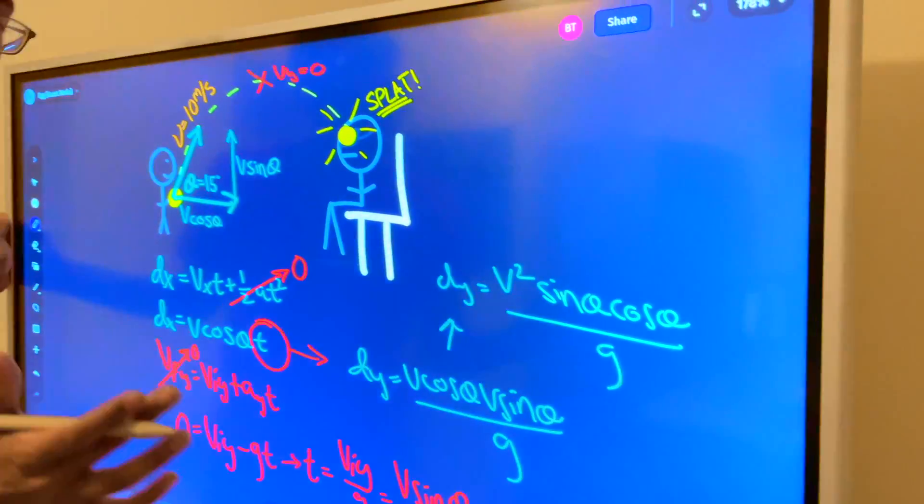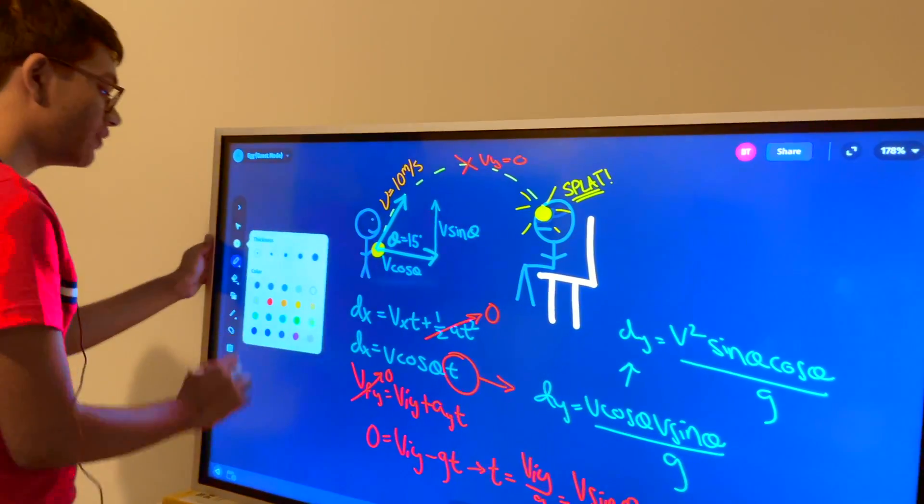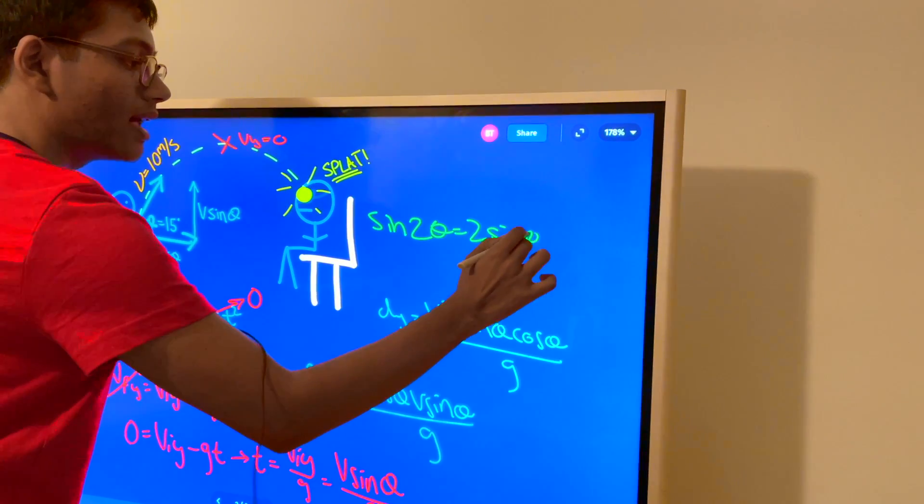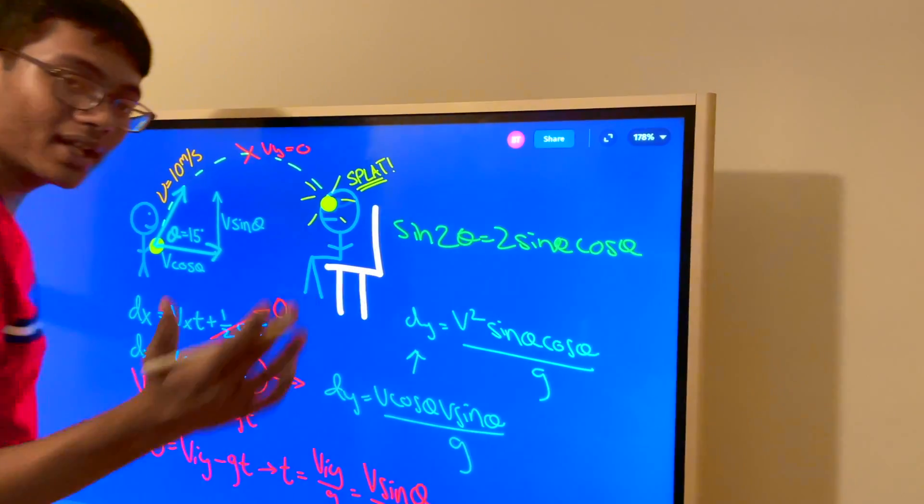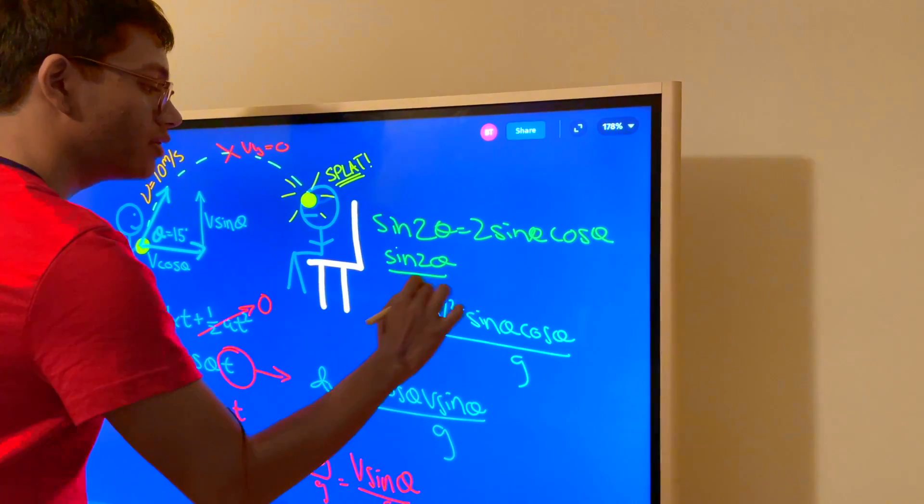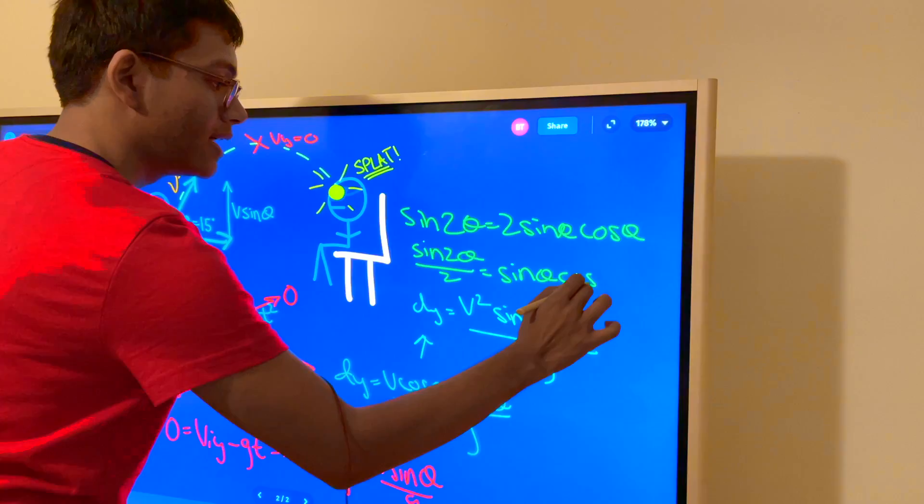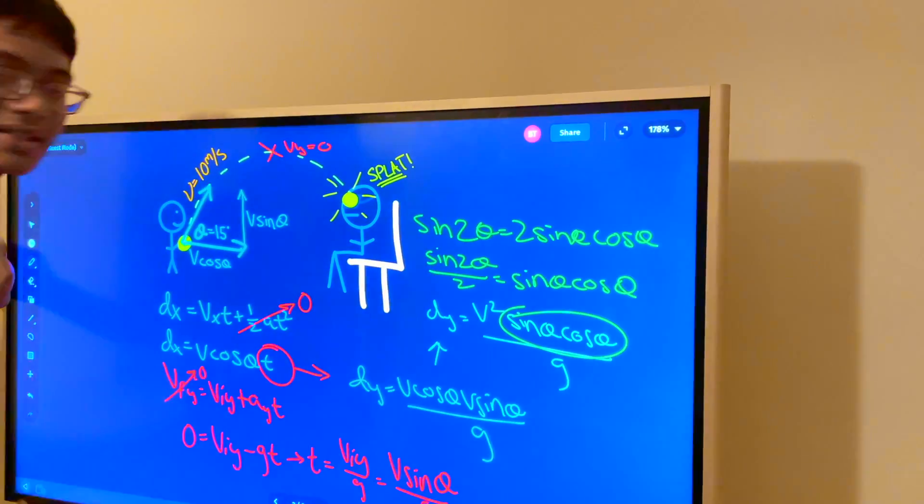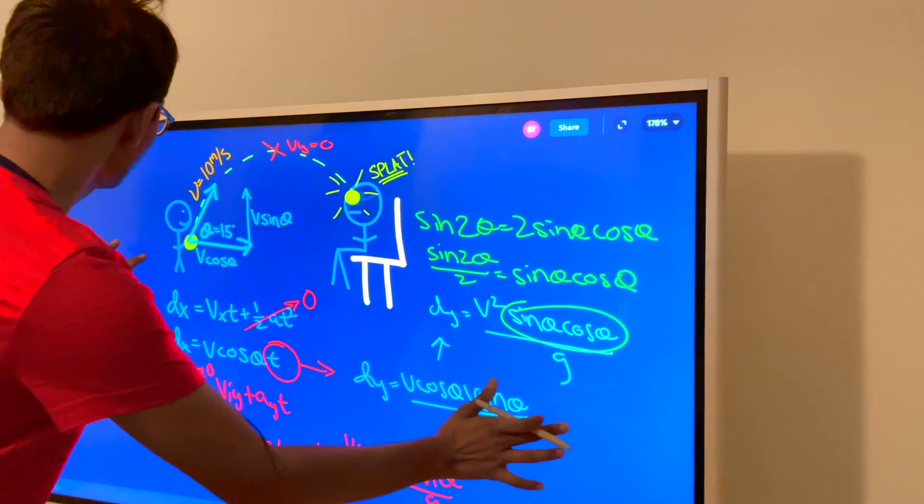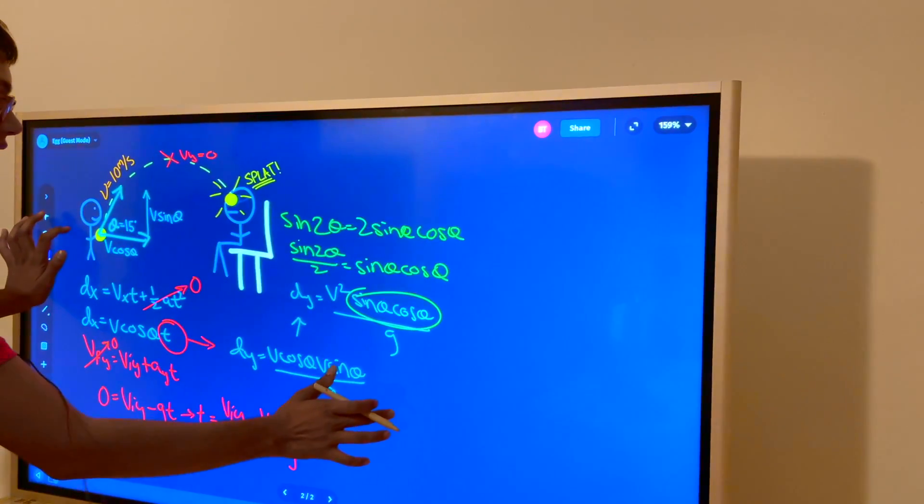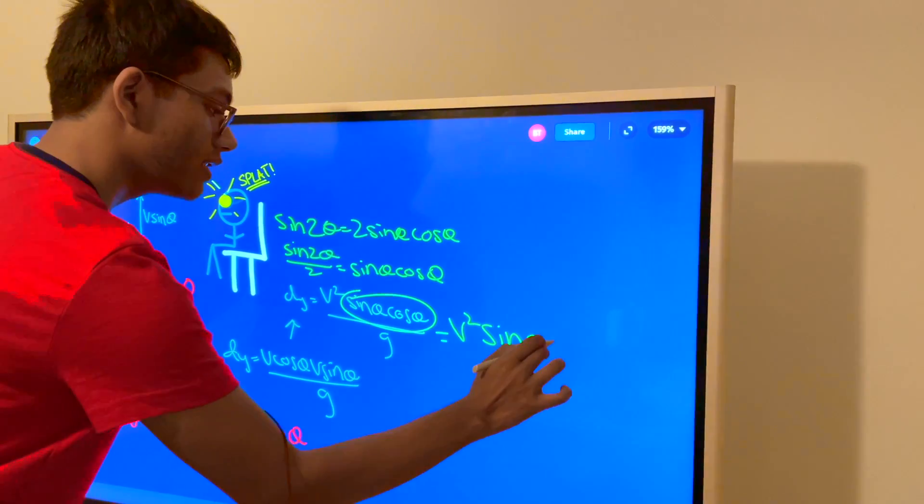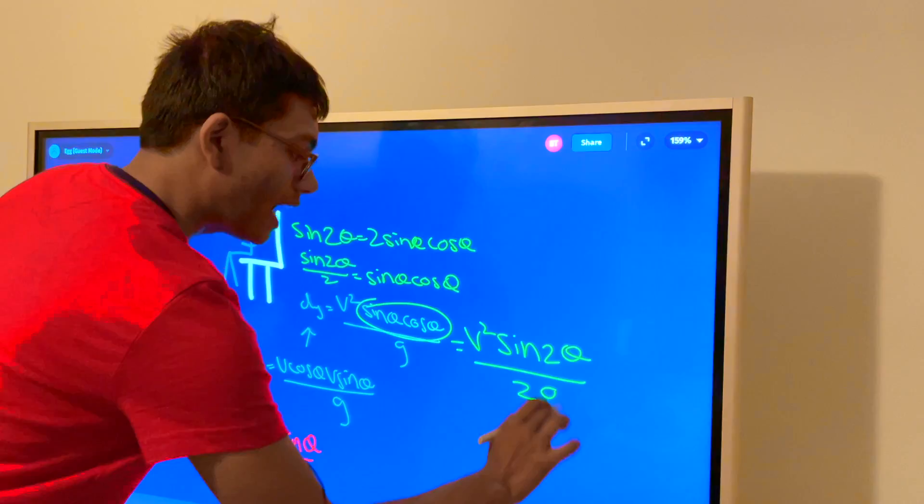But if you know a trigonometric formula you can actually simplify that even more. Remember that sin(2θ) is equal to 2*sin(θ)*cos(θ). So if I go ahead and divide both sides by 2 I'm going to get sin(2θ) divided by 2 is equal to sin(θ)*cos(θ). So I can divide all of this term by sin(2θ) divided by 2. So if I go ahead shift all of this to the right and replace all of this trigonometric function by v²*sin(2θ) divided by 2g I'm almost done.